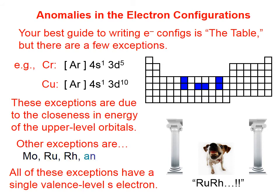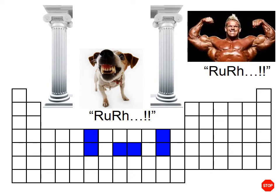Those elements all have a single valence level S electron. Now, this material is not required for the AP Chemistry exam. However, I find it interesting and useful, so I ask my students to know it. Since I've come up with a mnemonic to help them, it's really not too hard to remember. Those are the notable elements that have a single valence level S electron — there's your mnemonic.